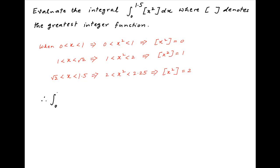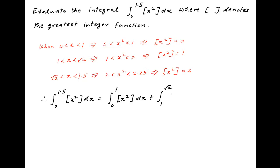The given integral ∫₀^1.5 ⌊x²⌋ dx can therefore be broken into three parts. The first part is the integral from 0 to 1 of ⌊x²⌋ dx. The next part is the integral from 1 to √2 of ⌊x²⌋ dx.